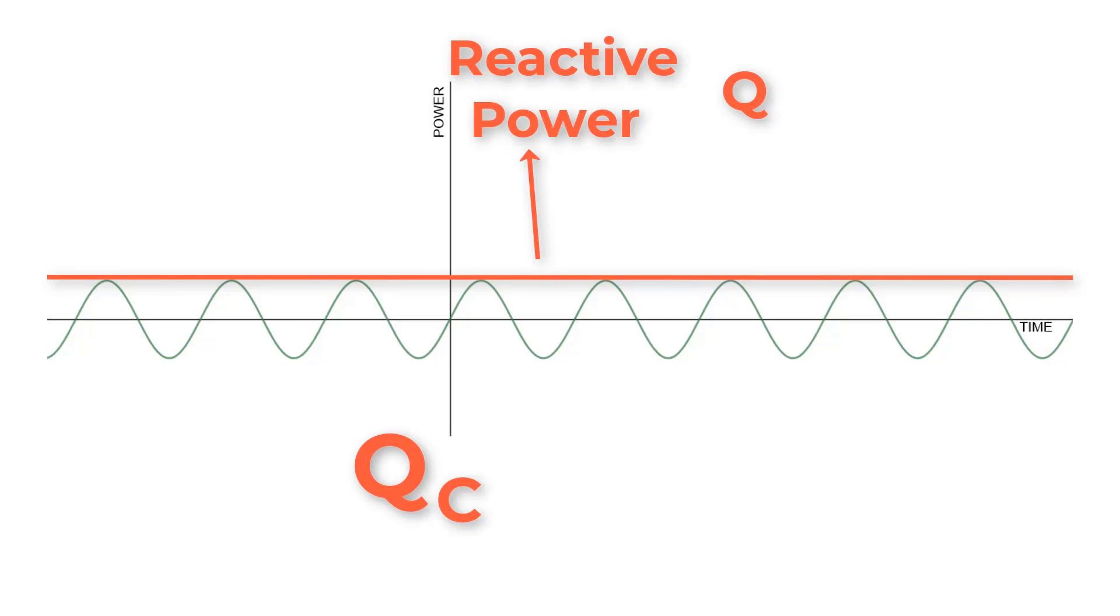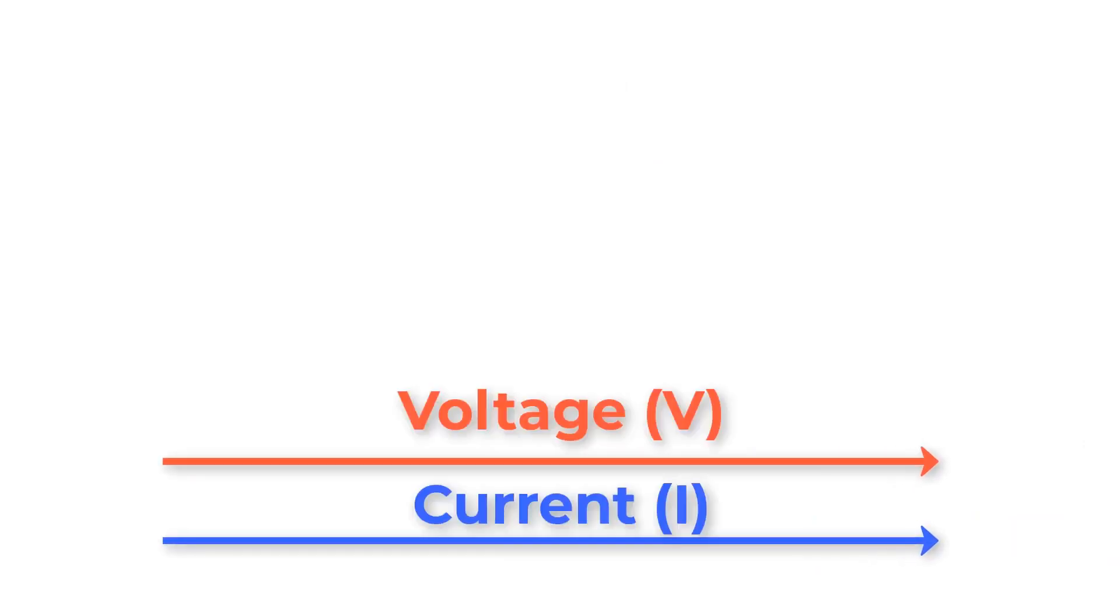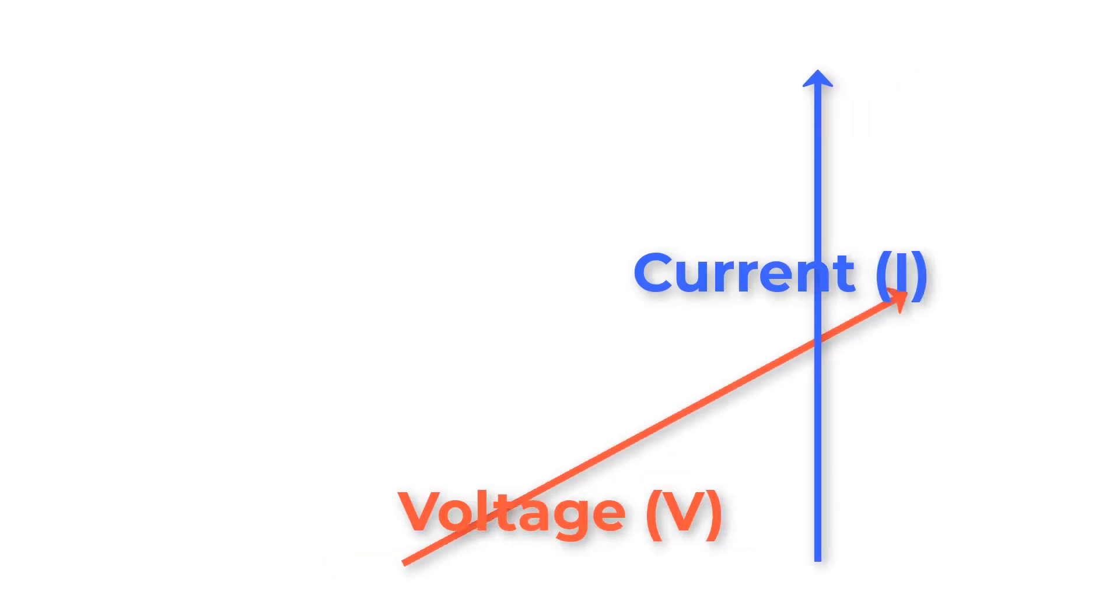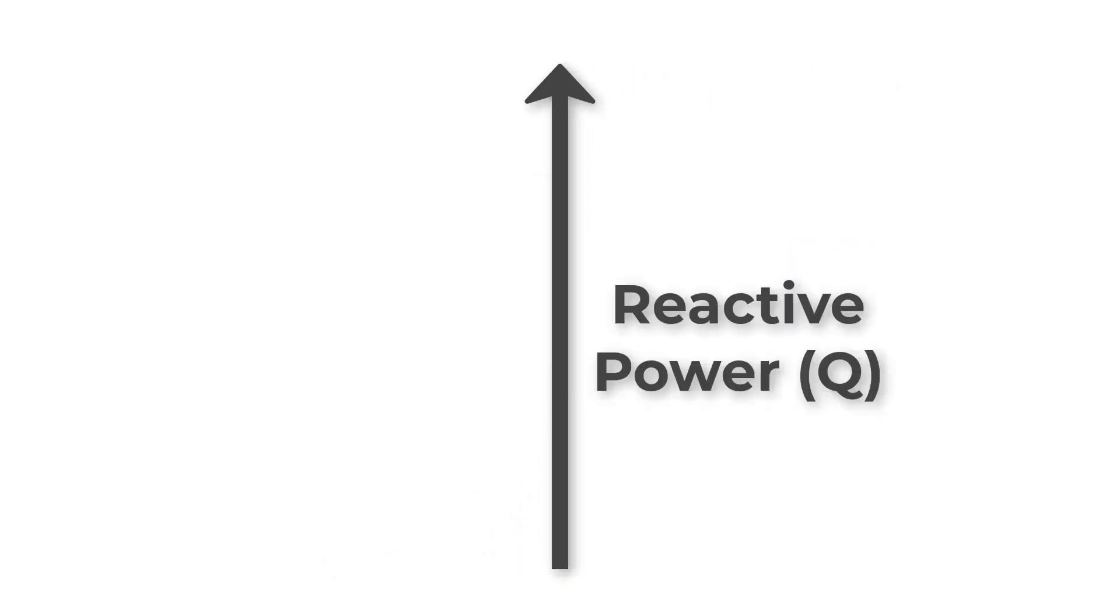So in phasor diagram form, if V and I are in phase, active power P will be produced. But if I is shifted by 90 degrees, reactive power Q will be produced.